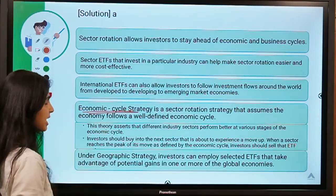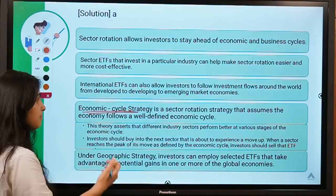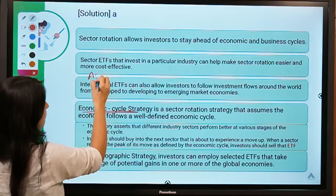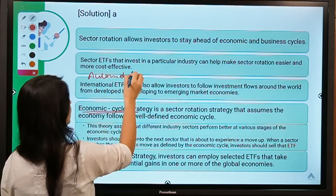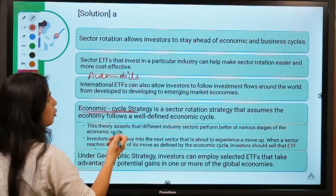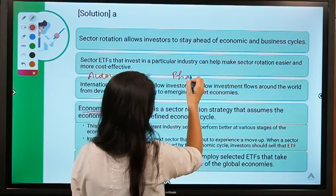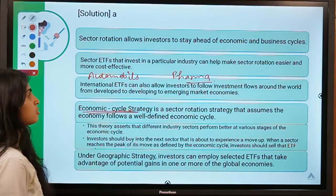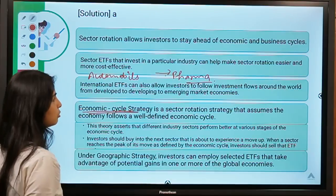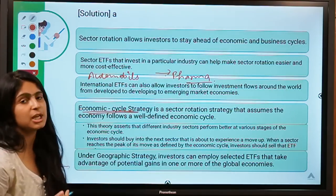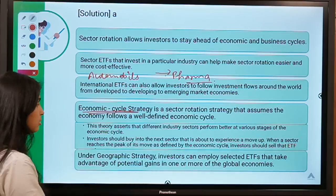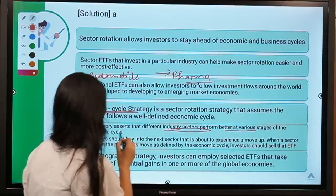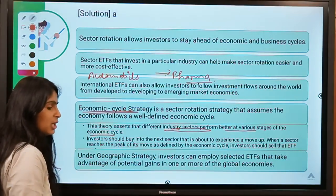Under sectoral rotation strategy, there are several types. The economic cycle strategy changes investments according to the economic cycle. For instance, currently automobiles are witnessing a bad phase while pharma is doing relatively better. Mutual funds and ETFs monitor which sector is likely to be profitable and move money accordingly. Different industry sectors perform better at various stages of the economic cycle.